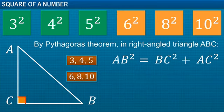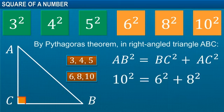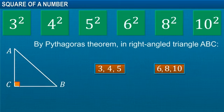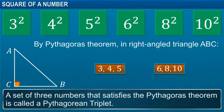6, 8 and 10 is another such combination. A set of three numbers that satisfies the Pythagoras theorem is called Pythagorean triplet.